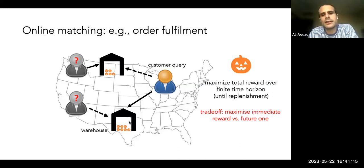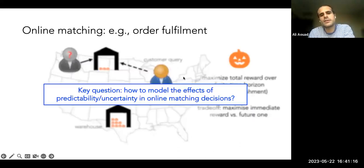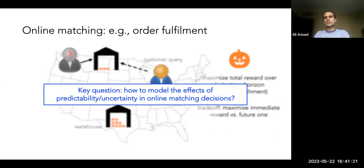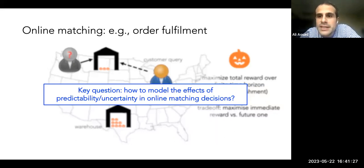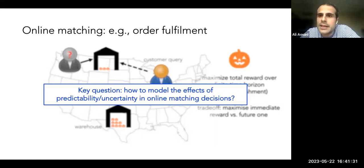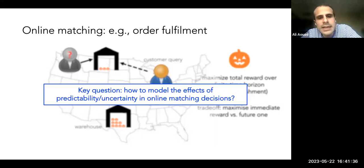The question we started with is: how should we model the effects of predictability and uncertainty in online matching decisions? If there's low uncertainty, the problem is easy because I know the future, so I can be comfortable doing intertemporal tradeoffs. But if there's a lot of uncertainty, maybe myopic decisions are fine enough because the future is more uncertain.